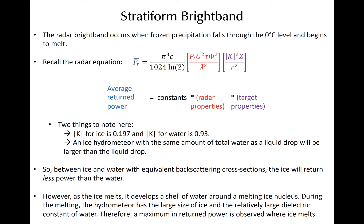However, melting ice hydrometeors are often aggregates that are much less dense than liquid water drops and therefore have larger backscattering cross sections. Since reflectivity is very sensitive to the size, the ice can still return plenty of power despite its lower dielectric constant. The region of melting ice experiences large melting ice hydrometeors that are surrounded by a liquid water shell that maximizes k. The radar sees the increase in return power as an increase in reflectivity.